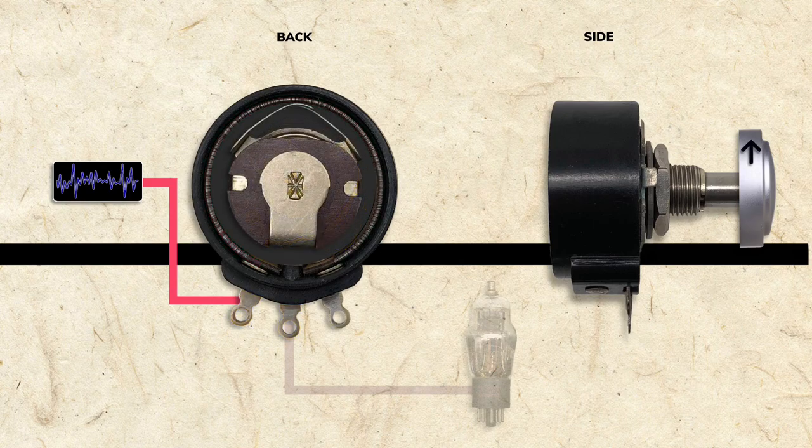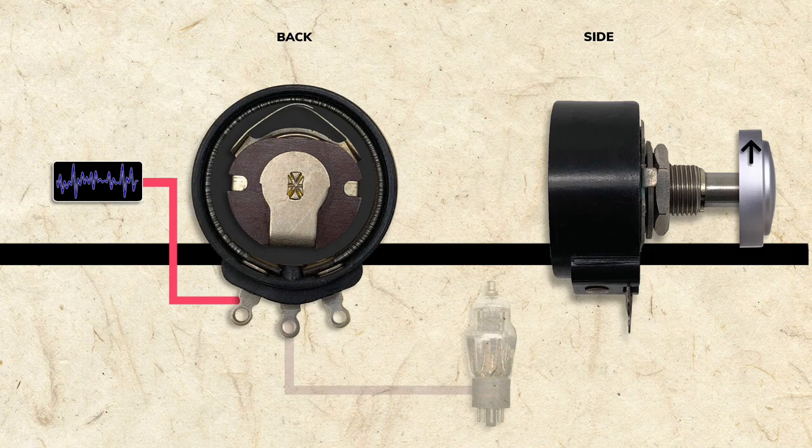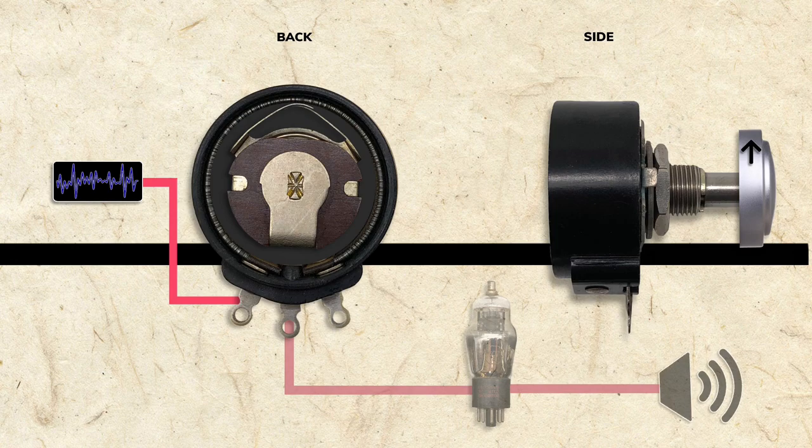As the knob is turned clockwise, the wiper moves to a point with less resistance and the circuit strength increases. As a result, the volume from the speaker also increases.